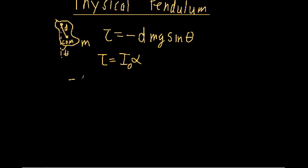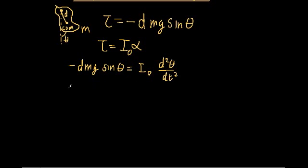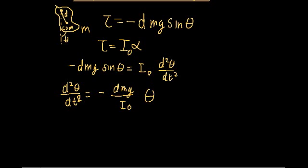So let's plug everything in: minus D times Mg times sine theta is equal to I-naught times the second derivative of theta with respect to time. Then we can divide by I-naught and use our small-angle approximation, and we'll recover the differential equation: the second derivative of theta with respect to time equals minus (DMg / I-naught) times theta. This means the system will oscillate with simple harmonic motion at angular frequency omega equals the square root of DMg over I-naught.